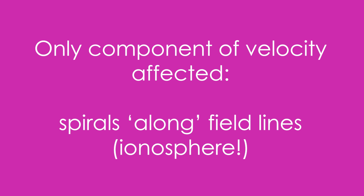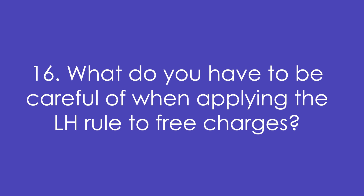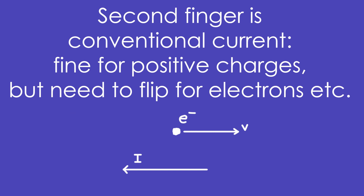That's what happens in the ionosphere. Question 16: What do you have to be careful of when applying the left hand rule to free charges? Your second finger represents conventional current — the flow of positive charge. So it's fine for positive charges, but you need to flip it for an electron.